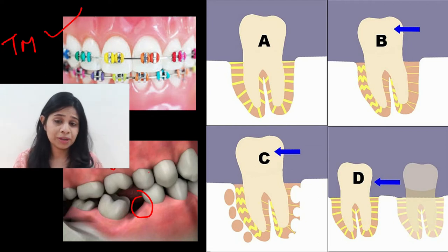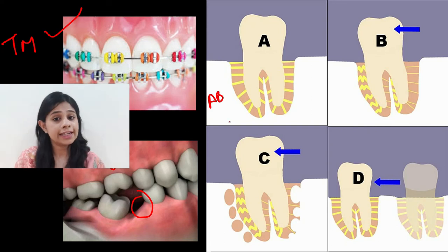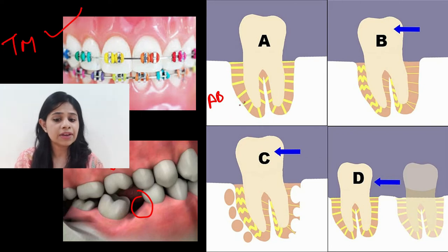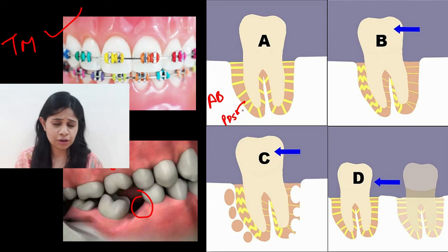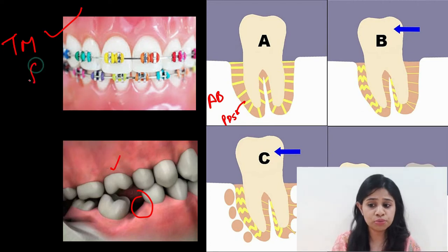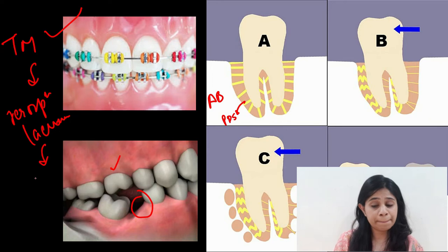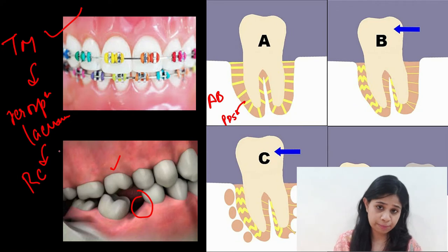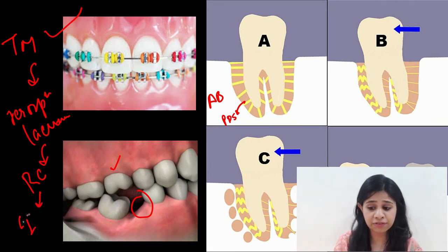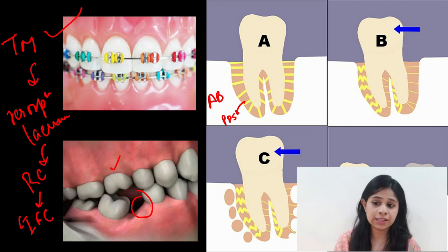With any type of tooth movement, three basic tissues get altered. First, the alveolar bone shows areas of resorption and formation. Then the periodontal ligament space shows areas of tension and pressure. Ultimately, the cemental tissue also undergoes changes — specifically, formation of resorption lacunae. These lacunae are repaired with the help of reparative cementum, which is the cellular intrinsic fiber cementum.